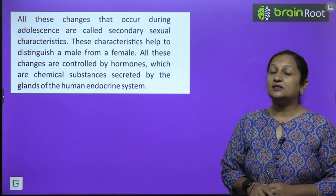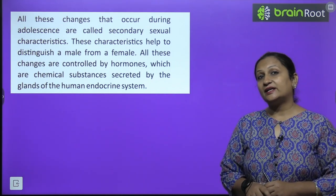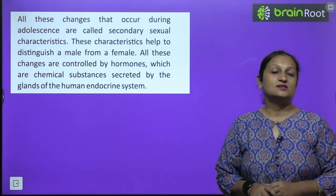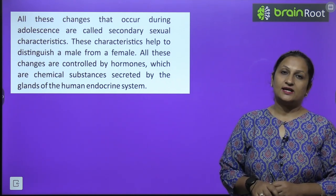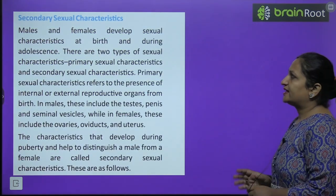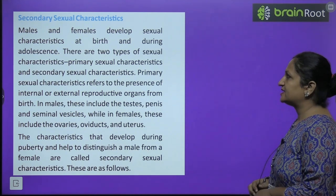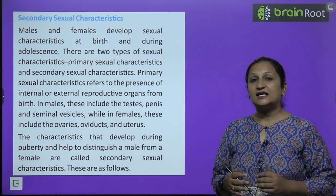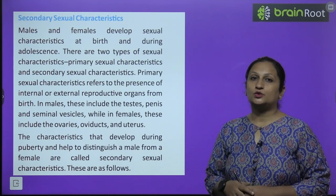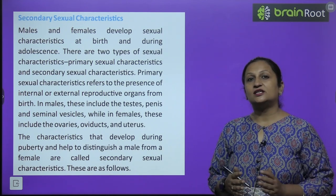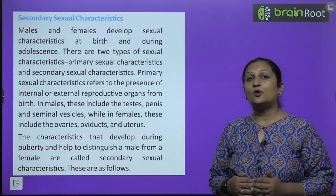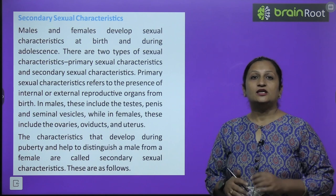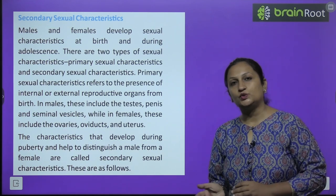What are hormones? Hormones are chemical substances that are secreted by a gland called an endocrine gland and act on a target organ. These are the chemical substances because of which we can distinguish whether an organism is male or female. Secondary sexual characters: males and females develop sexual characters at birth — boys have testes and penis, girls have ovaries. But the changes that develop later in the body are called secondary sexual characters, which tell us physically whether a person is male or female.